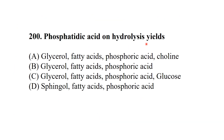MCQ 196: Phosphatidic acid on hydrolysis yields — after hydrolysis of phosphatidic acid, we get glycerol, fatty acid, and phosphoric acid.